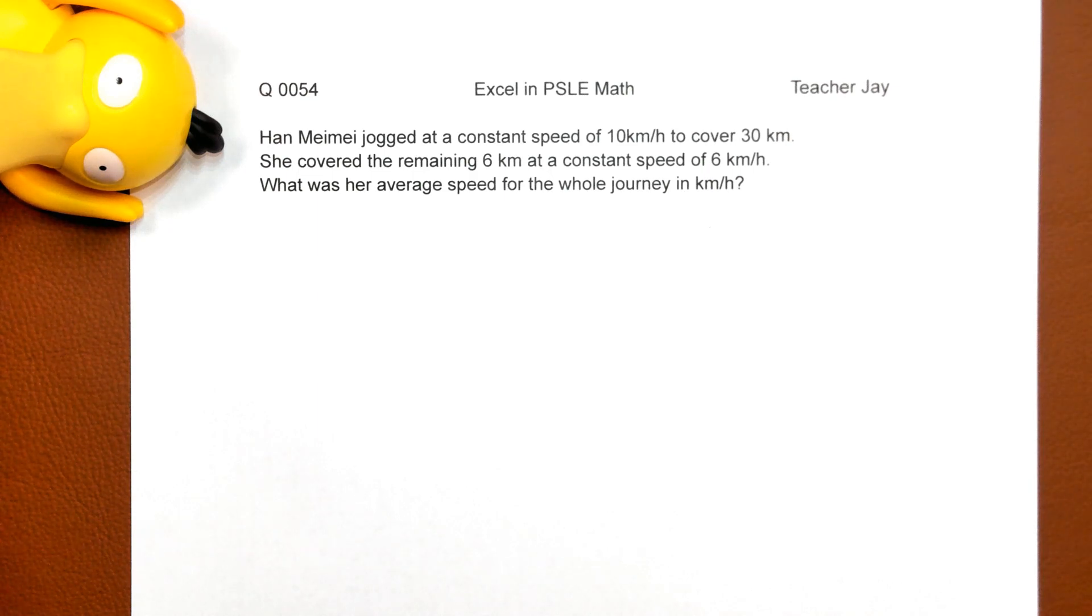Han Meimei jogged at a constant speed of 10 kilometers per hour to cover 30 kilometers. 韩美美这个同学,她以一个constant speed恒定的速度, we call it uniform speed of 10 kilometers per hour, 十千米每小时。